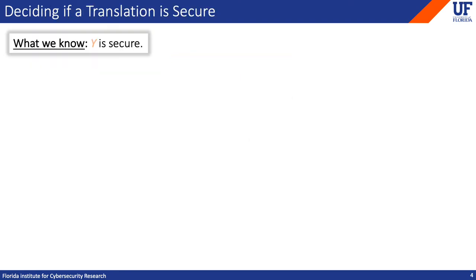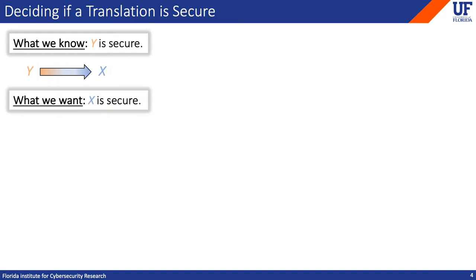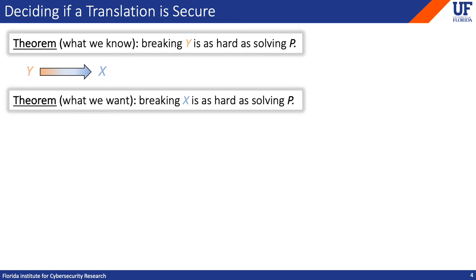Suppose we have a security proof for some reference system Y. When we translate Y into a new system X, the hope is that X is at least as secure as Y — that is, the translation doesn't result in a new attack. The way we verify this is to repeat the same analysis for X that's already been done for Y. That is, if breaking Y is as hard as solving some problem P, what we want to show is that this reduction from the hardness of P to the security of Y can be modified to account for the translation. But this task bears a significant analytical cost, and one that might make a rigorous treatment of this problem prohibitive, because generating a fresh proof requires a certain amount of work, and depending on how different the real system is from the reference system, this task is likely to be highly redundant.